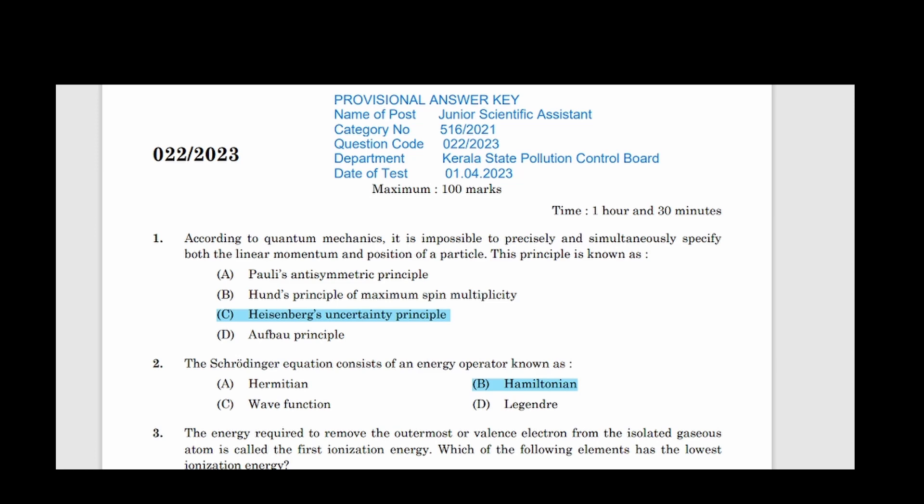First question: According to quantum mechanics, it is impossible to precisely and simultaneously specify both the linear momentum and position of a particle. This principle is known as. Correct answer option C, Heisenberg's Uncertainty Principle. Second question: The Schrodinger equation consists of an energy operator known as. Correct answer option B, Hamiltonian.